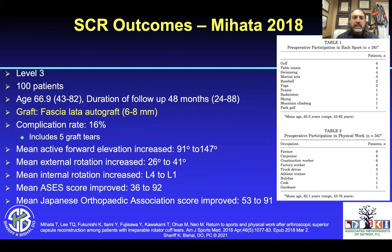Mahata's group in 2018 reported on 100 patients using a fascial autograft 6 to 8 millimeters thick, with a complication rate of about 16% and five graft tears. There was a significant increase in range of motion and mean Japanese Orthopedic Association score improved from 53 to 91. These were salt-of-the-earth type patients — farmers, carpenters, construction workers — who were able to return to their normal jobs.